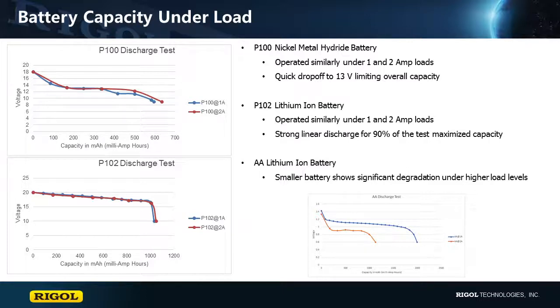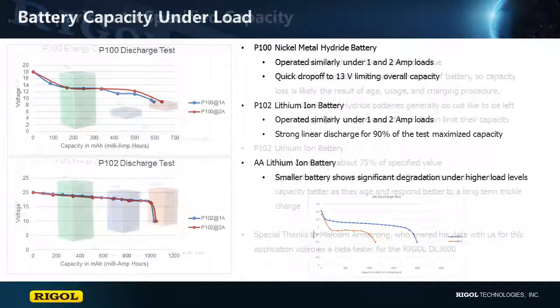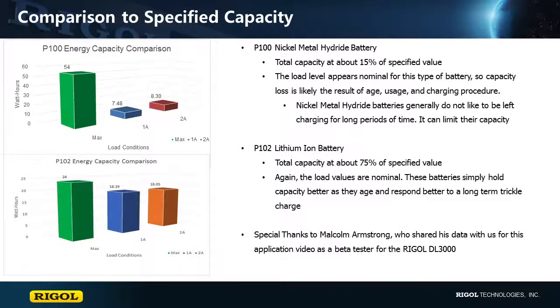Now let's compare these results to the specifications for the batteries. Here we see that the nickel metal hydride batteries are only operating at about 15% of their specified capacity. This is largely due to their age and the charging cycles. Historically, nickel metal hydride batteries do not like to be left on the charger and being charged for long periods of time. It can limit their capacity.